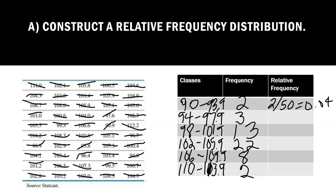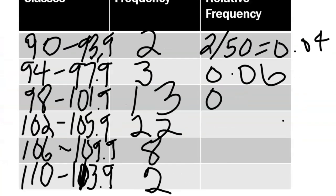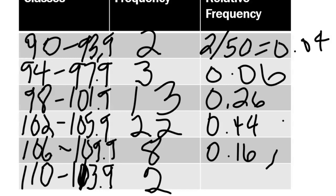Let's do that for each of them. 3 divided by 50, that gives you 0.06. If you do 13 divided by 50, that gives you 0.26. If you do 22 divided by 50, that gives you 0.44. If you do 8 divided by 50, that gives you 0.16. And then 2 divided by 50, we already did with 0.04.